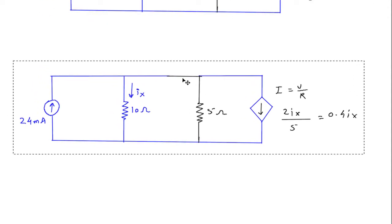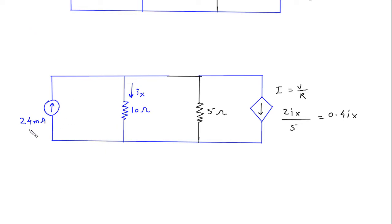Now as we can see that this 24 mA is flowing in opposite to 0.4 Ix, so this will be 24 mA minus 0.4 Ix.